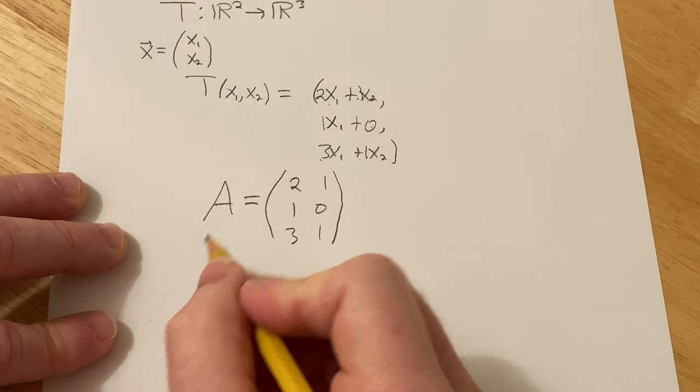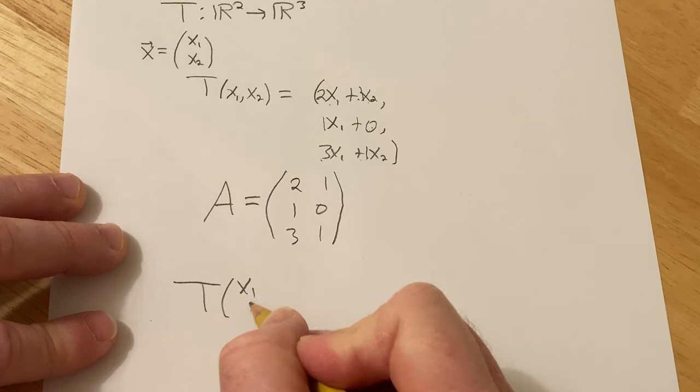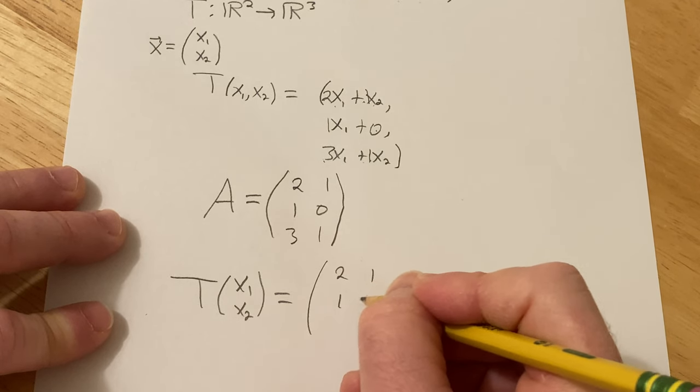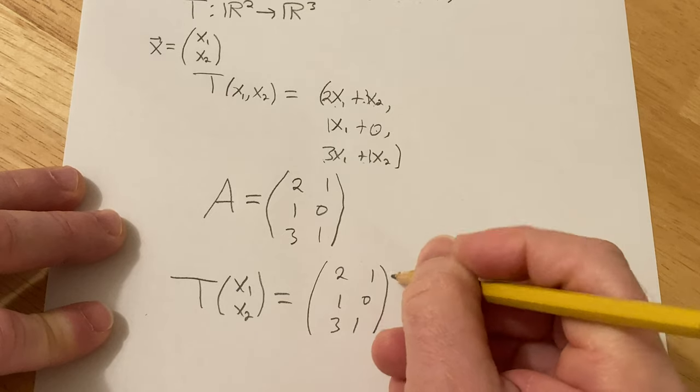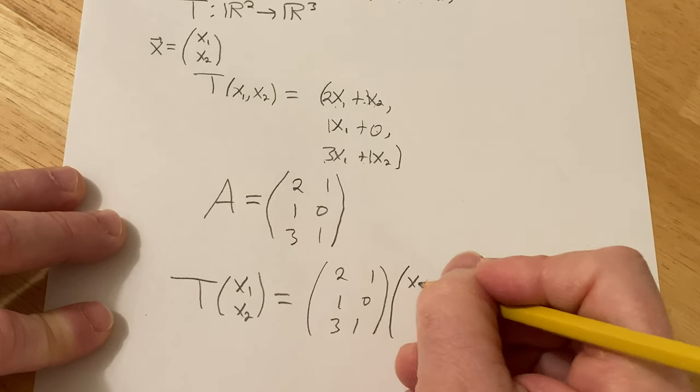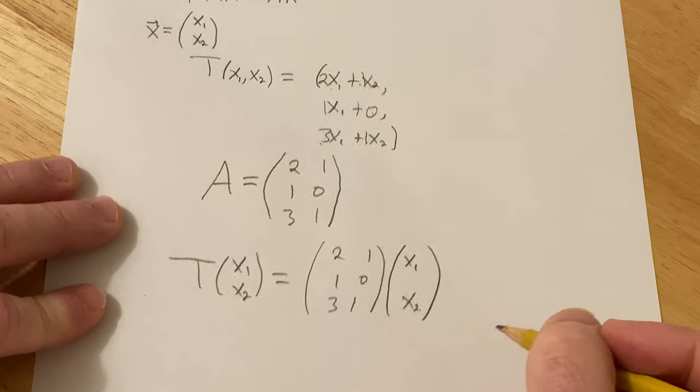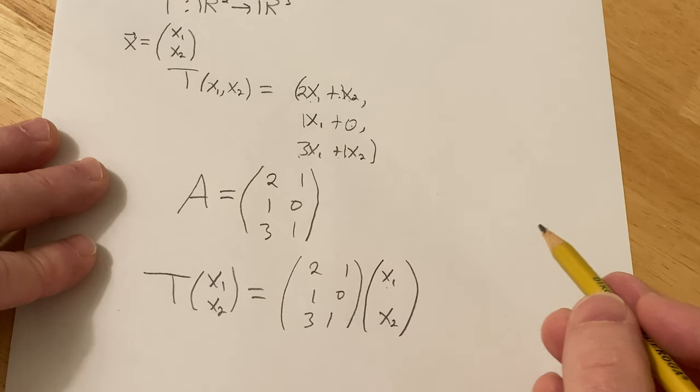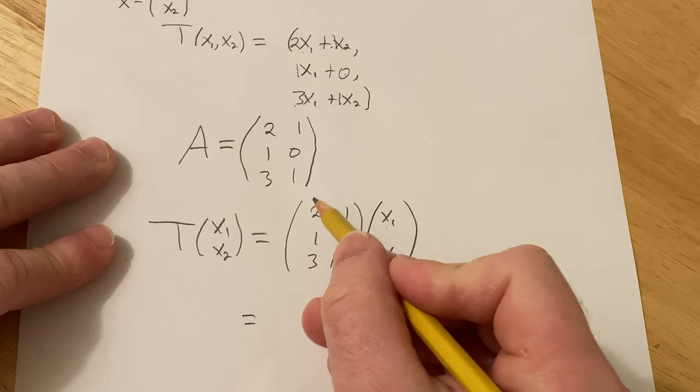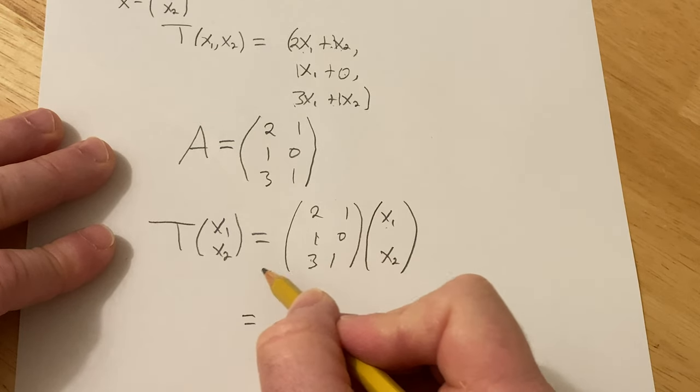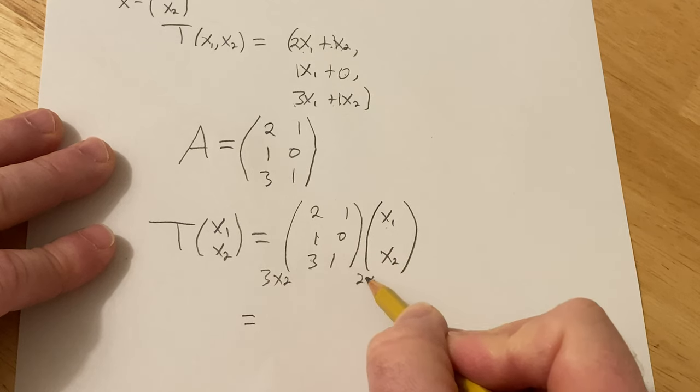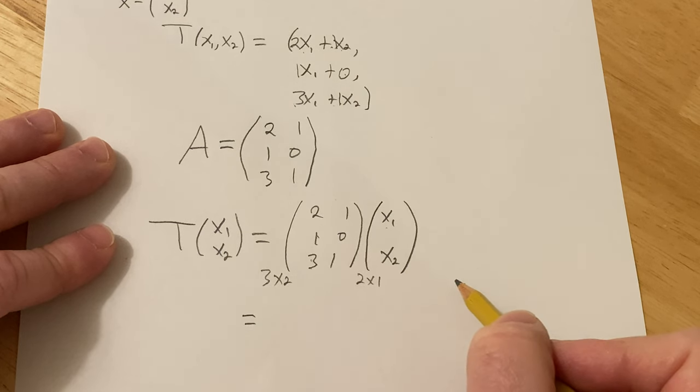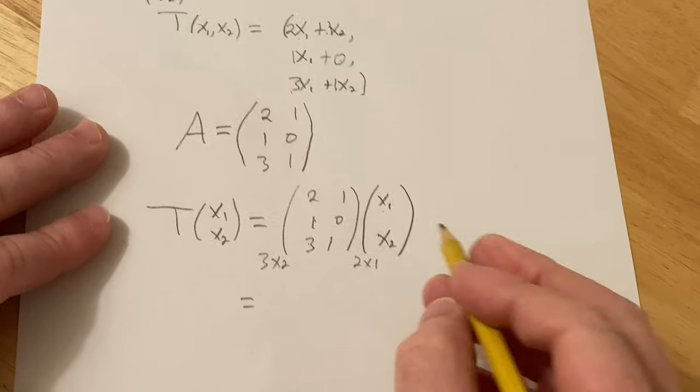So now we can think about it a different way. So now I'm going to use the vector notation. So T of x1, x2 is actually equal to the matrix 2, 1, 1, 0, 3, 1 times x1, x2. It's actually the same thing, right? This claim is that this is the same thing as what we started with. And it is. If you multiply this out, this is a 3 by 2 matrix. This is a 2 by 1 matrix, or just a column vector. So when you multiply this, you're going to get a 3 by 1 matrix. We'll get 3 rows and 1 column. So let's do it. Let's multiply it.